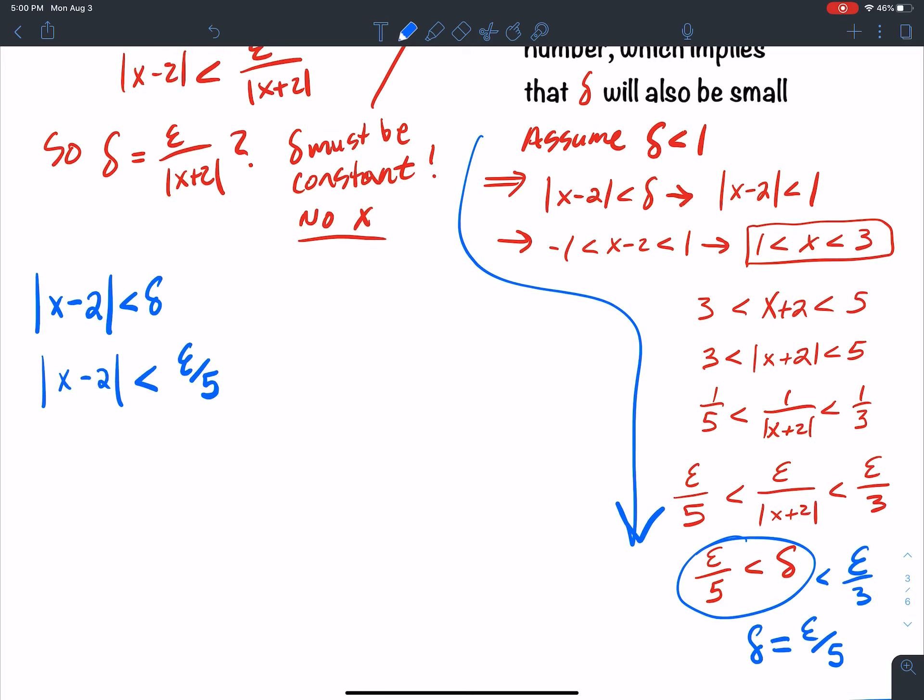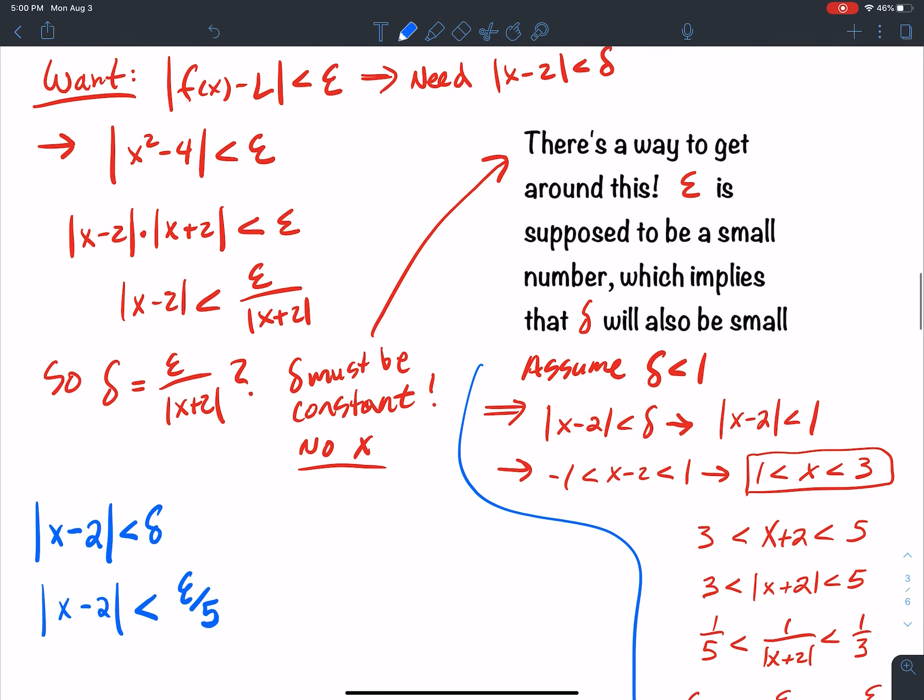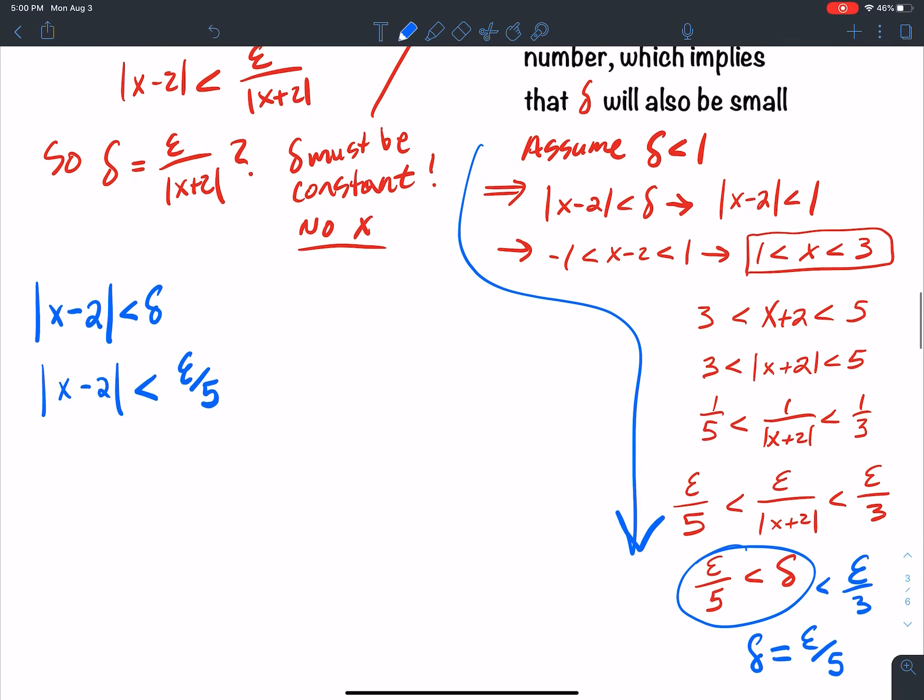Well, in my game plan, I was going from this point to this line right here. How did I do that? I multiplied both sides by absolute value x plus 2. So I multiply x plus 2, both sides here.